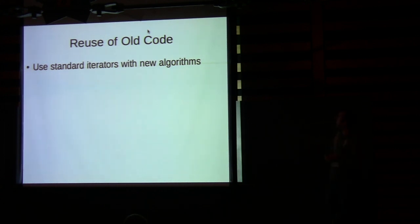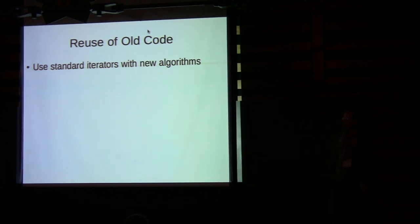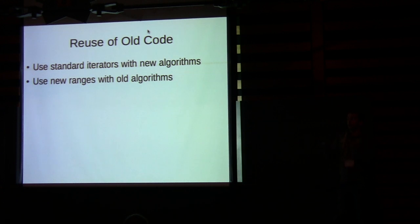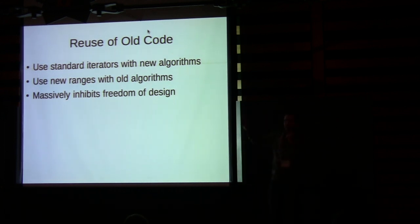Regarding reuse of old code: we want to use standard iterators from the standard library with algorithms written for our range library — this is easy, you just take two iterators and make a range. We also want to use ranges we define with old algorithms, getting begin and end iterators to use in old algorithms or a range-for loop. This second goal is much harder and really restricts what you can do.